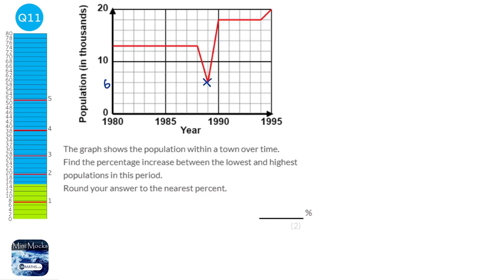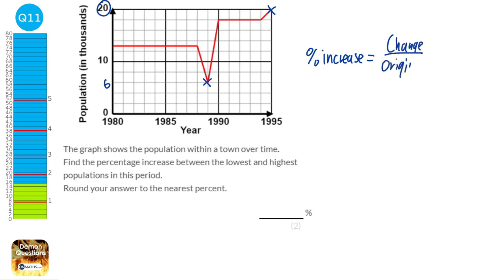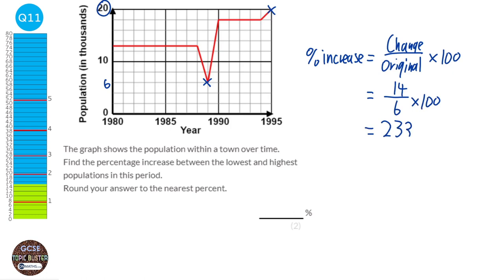The lowest point on this graph is at 0.6, and the highest point is at 0.20. We're looking for percentage change, and the formula is change over original times 100. So the change between 6 and 20 is 14. The original starting point was 6, so we do 14 over 6 times 100, and that gives us 233.333...%. It says it wants it to the nearest percent, so that would be 233%.